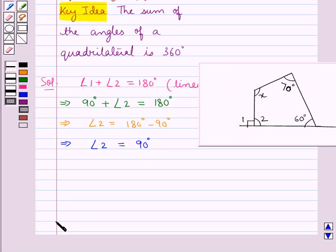So by using the key idea which says that the sum of the angles of a quadrilateral is 360 degrees, we can have angle 2 plus 60 degrees plus 70 degrees plus x is equal to 360 degrees.